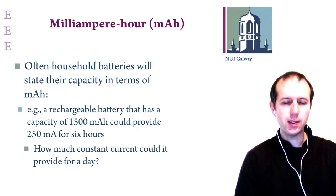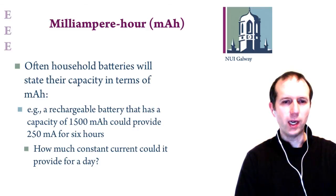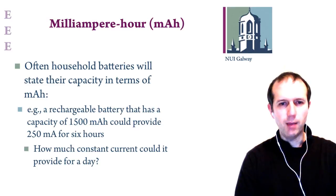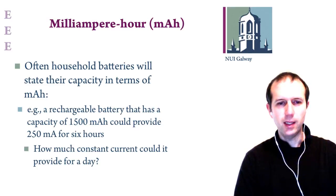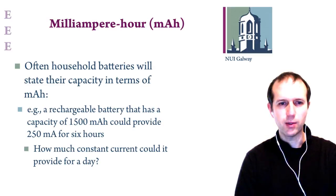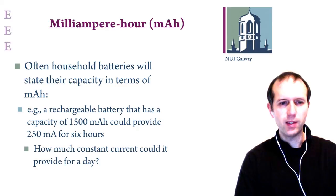A rechargeable battery rated at 1500 milliamp hours will provide 1500 milliamps for one hour. If you had a circuit that required 250 milliamps, that battery would be able to power it for six hours, and of course you can extrapolate from that. The question here — think about this yourself — is how much current could a 1500 milliamp hour battery provide for a full day if it was fully charged.